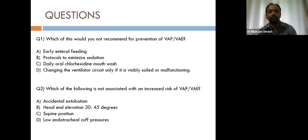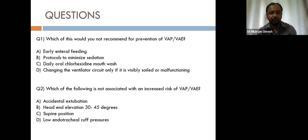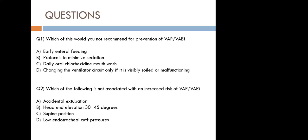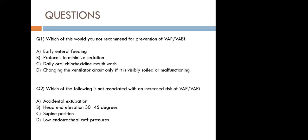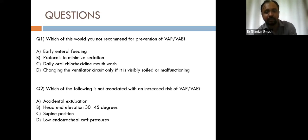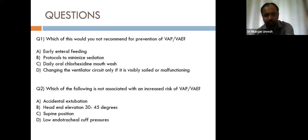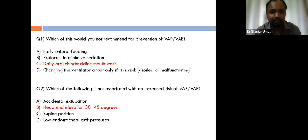Question 2: Which of the following is NOT associated with an increased risk of VAP or ventilator-associated events? A) Accidental extubation; B) Head-end elevation 30 to 45 degrees; C) Supine position; D) Low endotracheal cuff pressures. The answer to Question 1 is C — daily oral chlorhexidine mouthwash. The answer to Question 2 is B — head-end elevation 30 to 45 degrees is a preventive measure, not a risk factor.